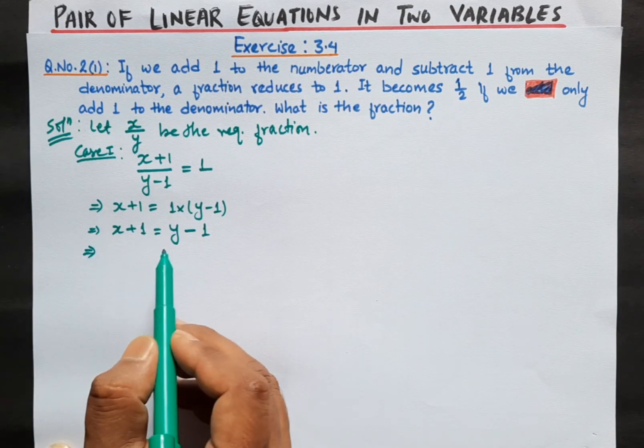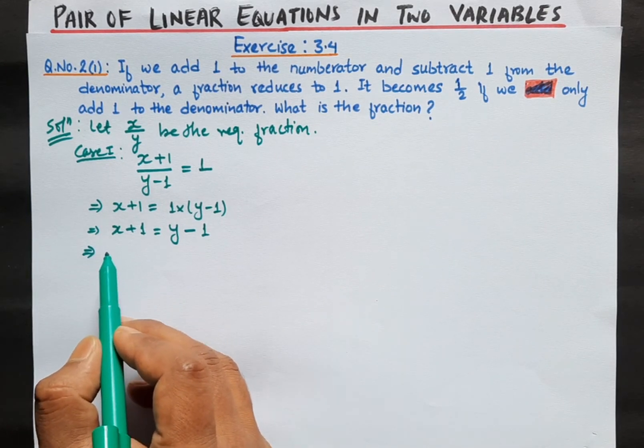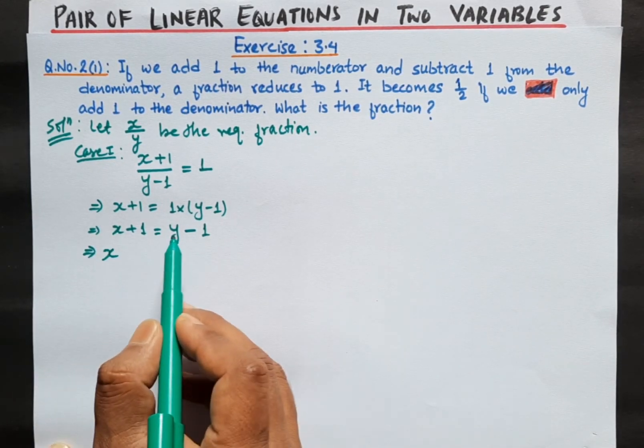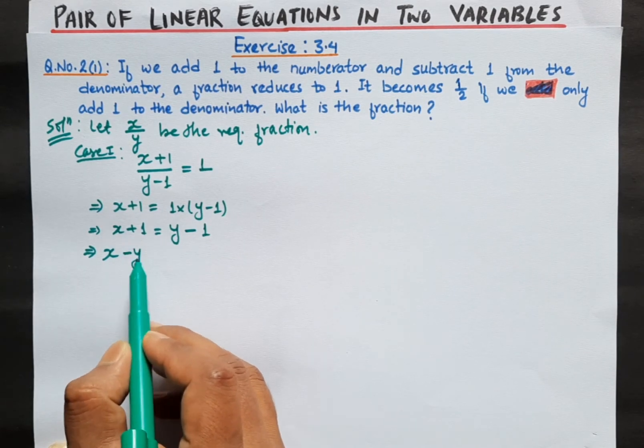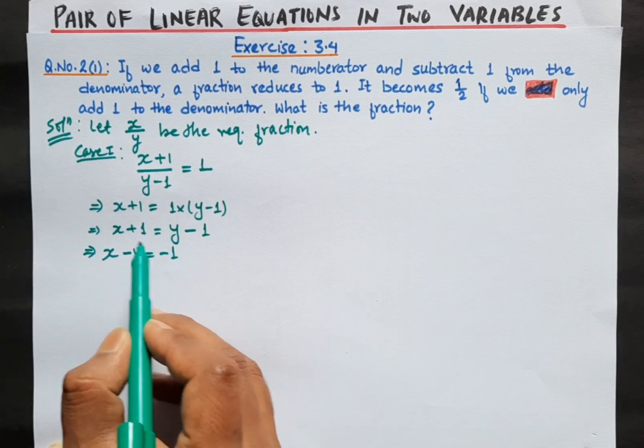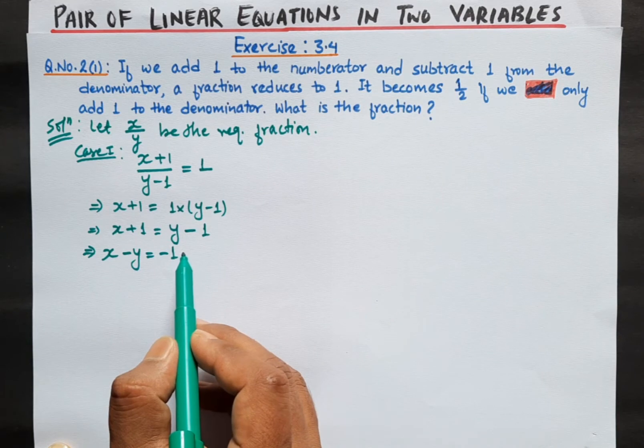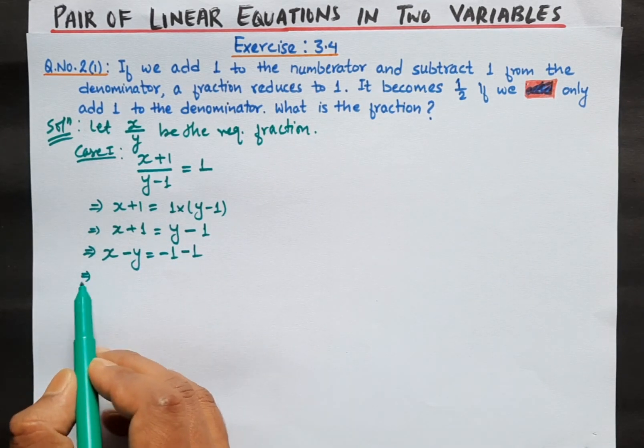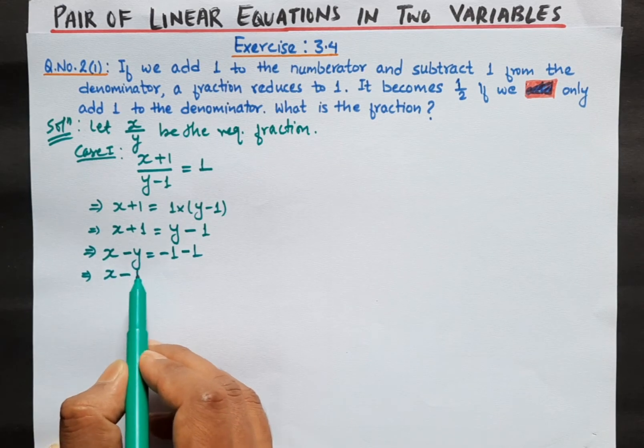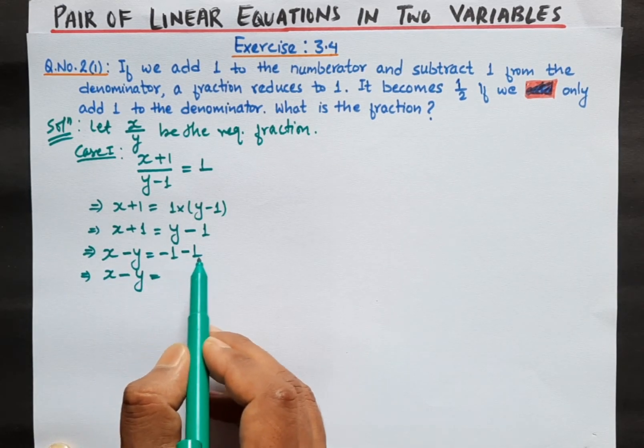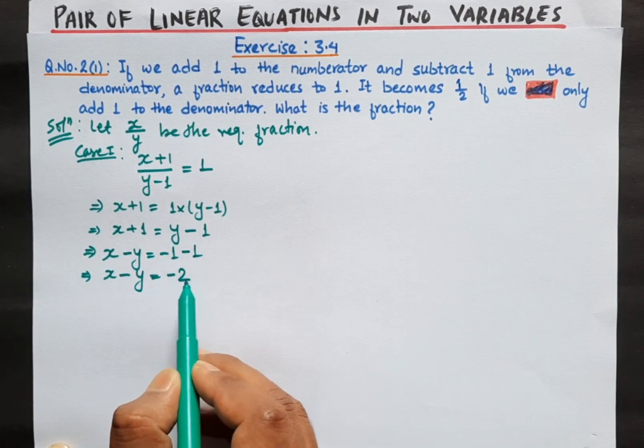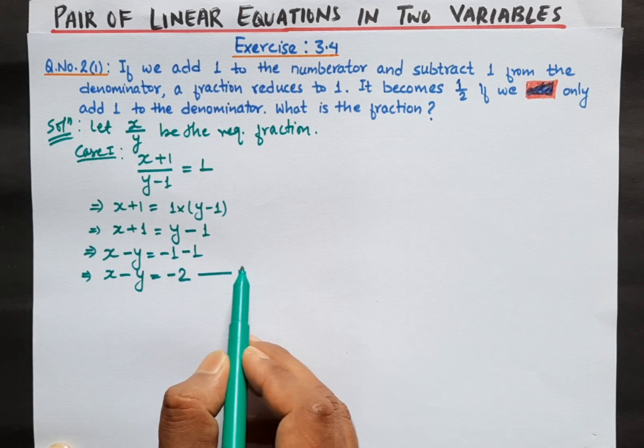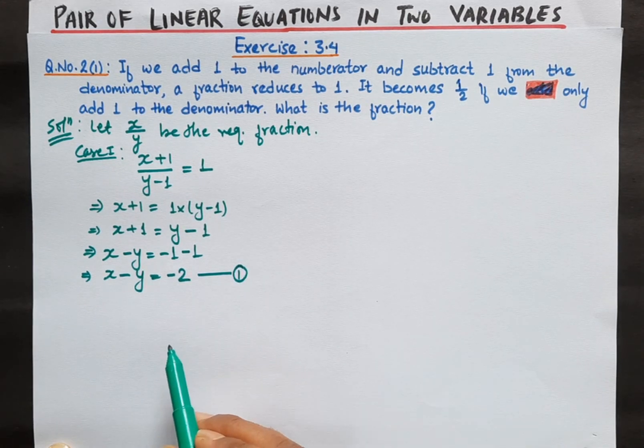Now moving variables to the left hand side, x minus y equals minus 1 minus 1, which is minus 2. So x minus y equals minus 2. This is our equation number 1.